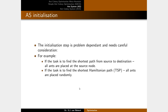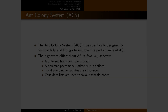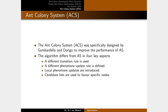Initialization is also problem dependent — for finding the shortest Hamiltonian path, such as the traveling salesperson problem, all ants can be placed randomly on the graph. Finally, the ant colony system was specifically designed to improve performance. The algorithm differs in four key aspects: a different transition rule, a modified pheromone update, a local pheromone update, and the use of candidate lists to favor specific nodes.